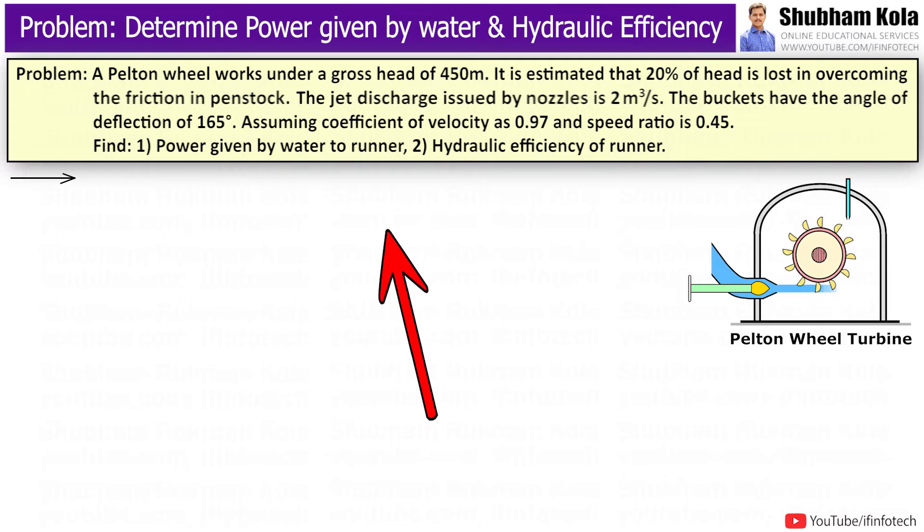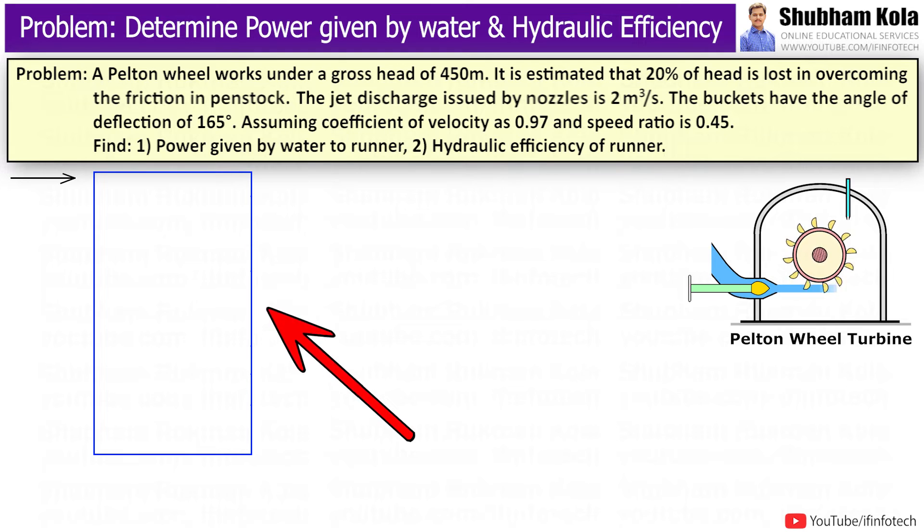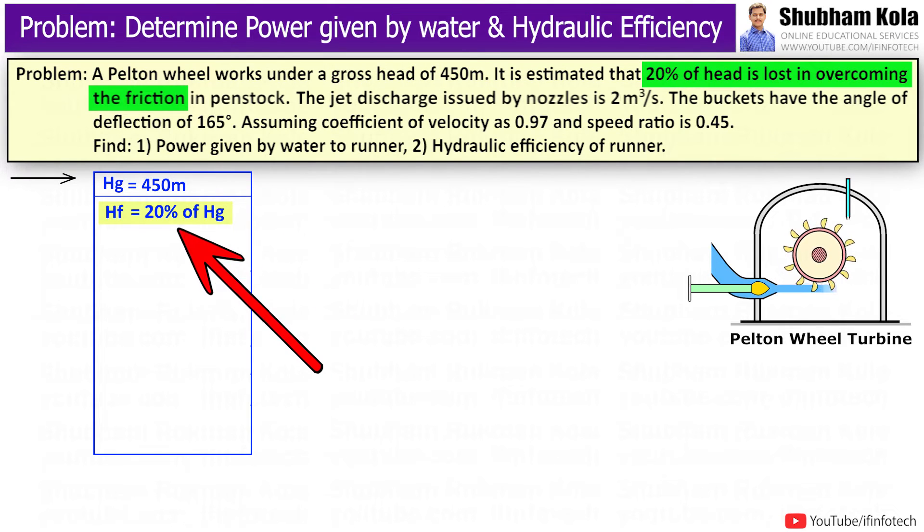This type of problem we solve in three steps. In the first step, I will write given data provided in the problem. So in the problem, we have gross head Hg equal to 450 meters. Friction head Hf equal to 20% of Hg, which is equal to 90 meters.